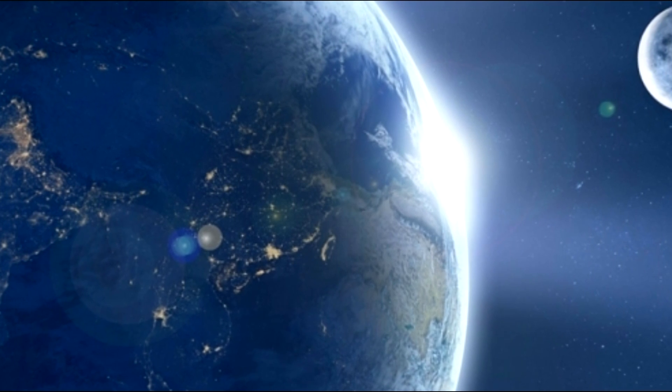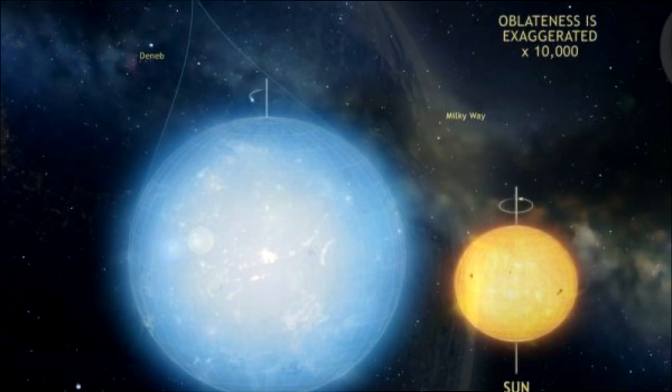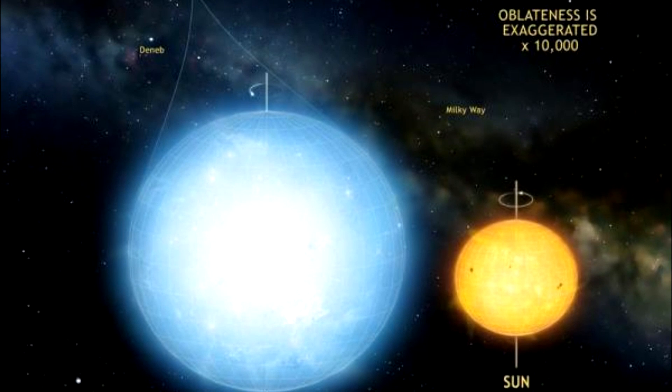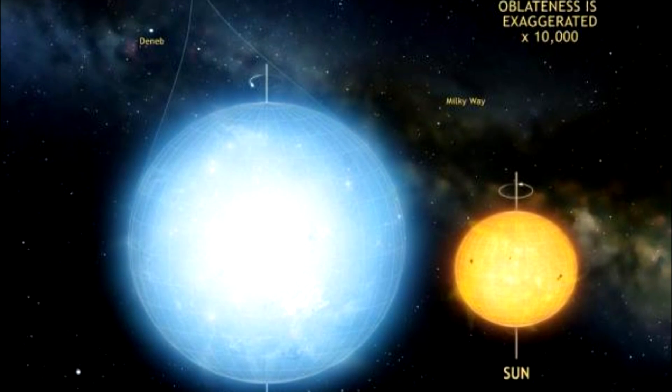Looking at pictures of stars and planets, the obvious thing to say about them is they're spherical, but in fact, they're technically oblate spheroids.